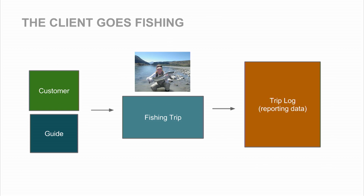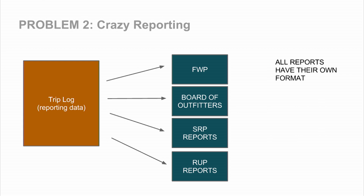Eventually they select one guide and match that guide with the customer. The outfitter doesn't go fishing at all — they're just the middleman. The fishing trip happens, and the final product is a trip log. The trip log contains information the state requires about the fishing trip. A single fishing trip has to be reported to four different entities, same data but different reports. These guys aren't computer geniuses — they live in log cabins and half our clients barely have internet. So they're having to do it by hand or use Microsoft Excel and copy and paste about 400 times.